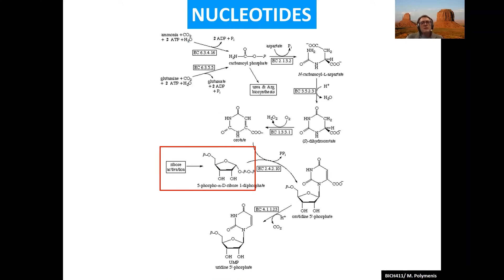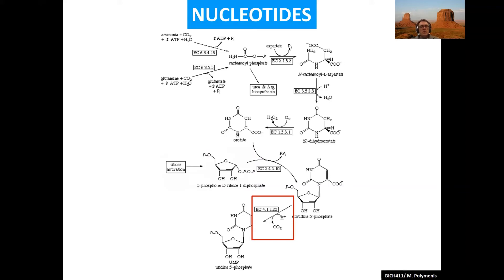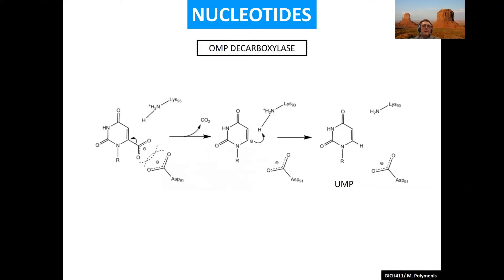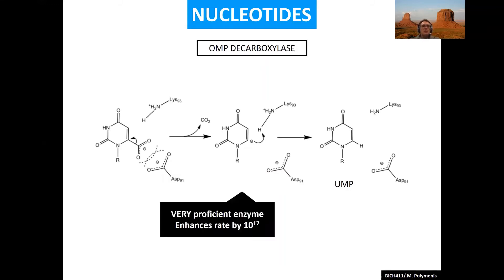The ribose to be incorporated into nucleotides must be activated, always in the PRPP form — with the pyrophosphate at the one position, which is the major input from the pentose phosphate pathway that generates ribose units for incorporation into nucleotides. To make UMP, you have to decarboxylate. The mechanism is shown here: as with any decarboxylation, you generate a carbanion, which picks up a proton from an amino group of the enzyme to give you UMP.